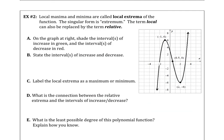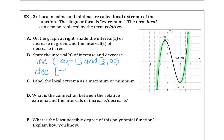In example 2, we shade the intervals of increase in green and intervals of decrease in red. The function is increasing from negative infinity to negative 1 and also from positive 2 to infinity. We state that interval from negative infinity to negative 1 and from 2 to infinity. The function is decreasing from negative 1 to positive 2 inclusively, which we shade in red.